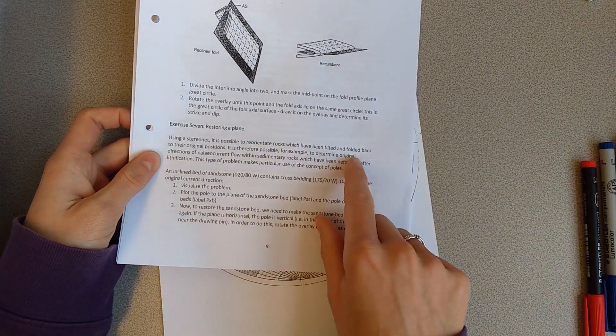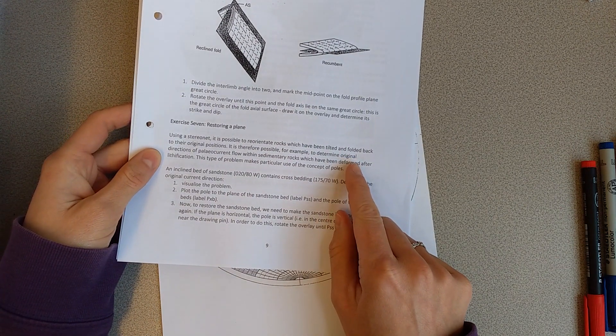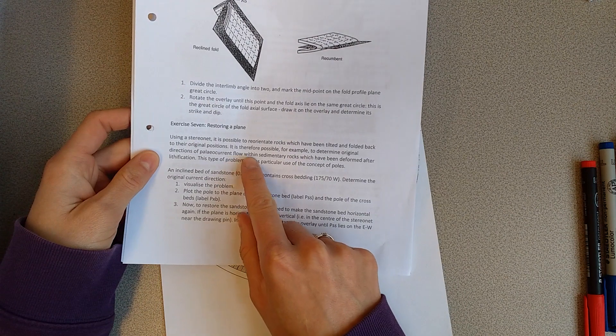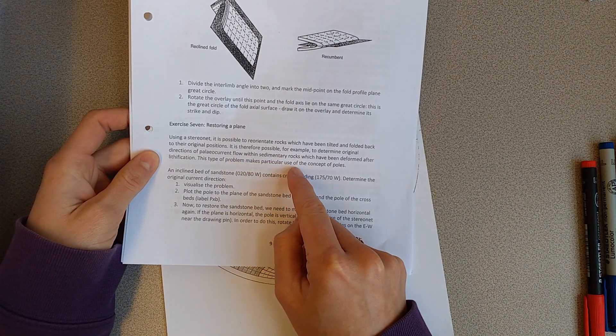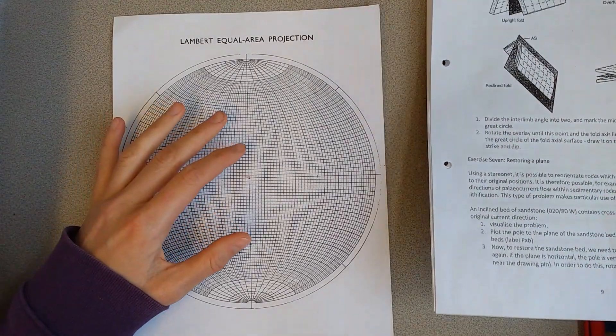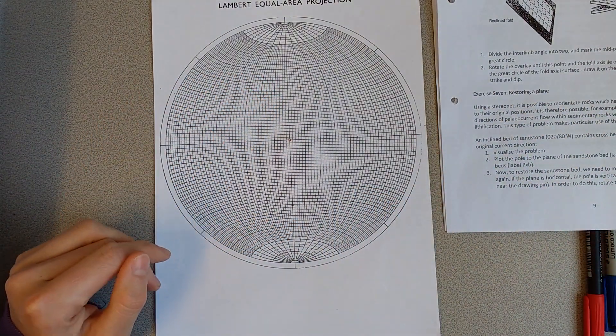The first part of this exercise is looking at some sedimentary beds that have some cross bedding which shows a paleo current within them. We're going to restore those beds back to horizontal and look for the original paleo current.